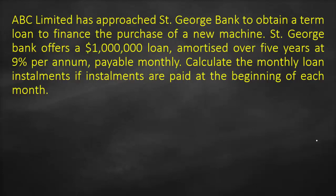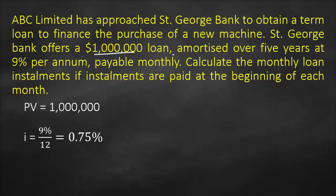What are the variables we have here? We have the loan amount, which is our present value — $1 million. We have our interest, which is 9% per annum, payable monthly, so I need to divide by how many months per year. We have 12, so 9% divided by 12 gives us 0.75% per month.